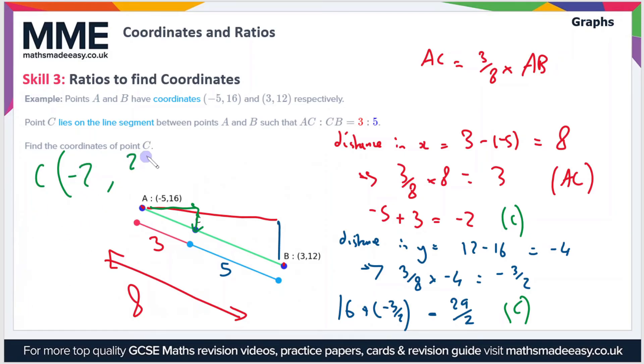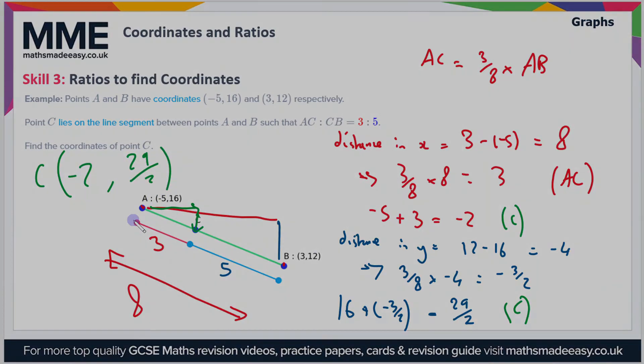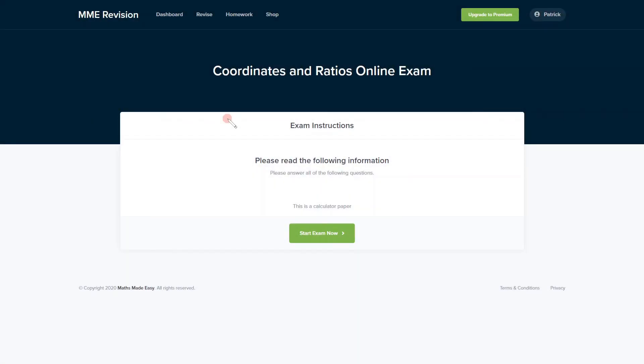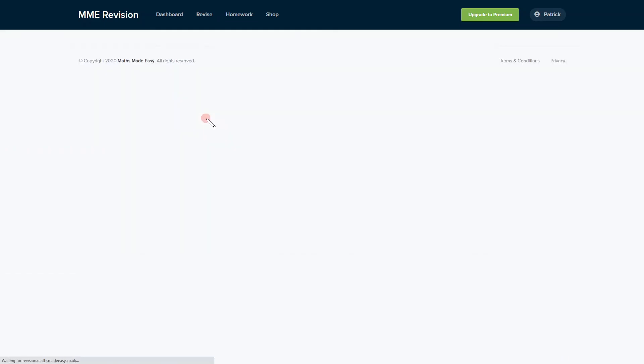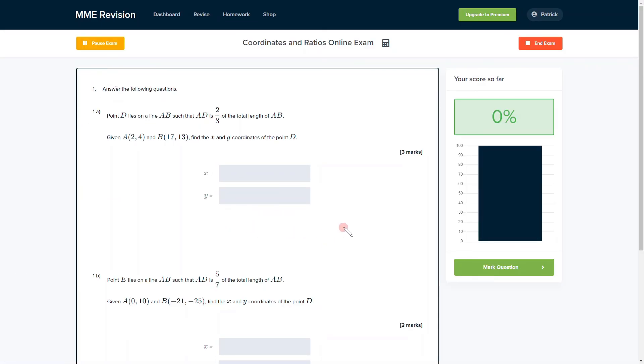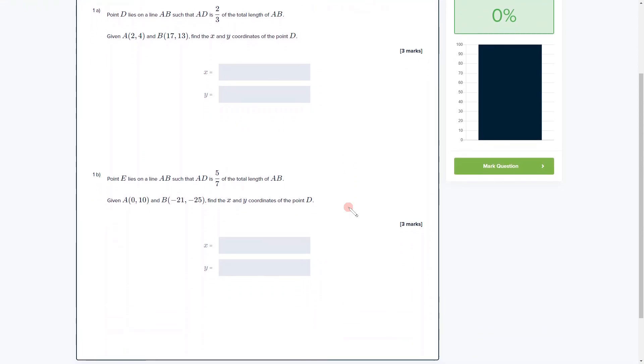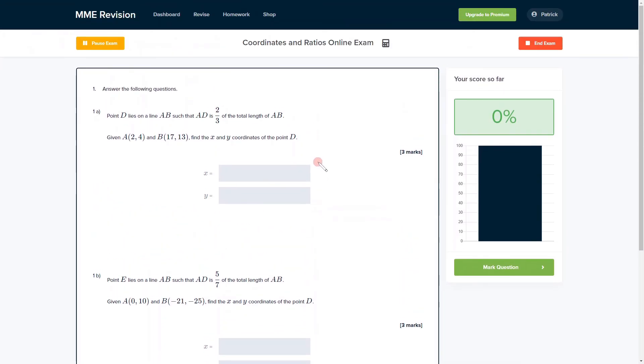If you'd like to practice the coordinates and ratios topic, you can do so with our online exam. You'll find loads of different questions in various question types, all in exam style, and you get instant feedback on each one so you can keep track of the areas you need to improve on. If you're interested, click the link below.